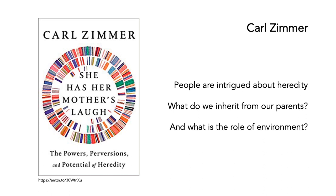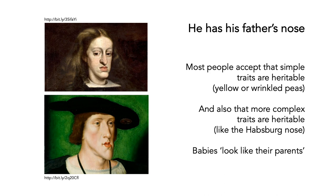Recently, Carl Zimmer wrote this lovely book called She Has Her Mother's Laugh, which shows that people are just really intrigued about heredity — what do we inherit from our parents and what is the role of environment? And the answer is, it's relatively complex. So the opposite of She Has Her Mother's Laugh is He Has His Father's Nose. Most people accept that simple traits are heritable — think of yellow or wrinkled peas. But it's also true that more complex traits are heritable, such as the Habsburg nose.